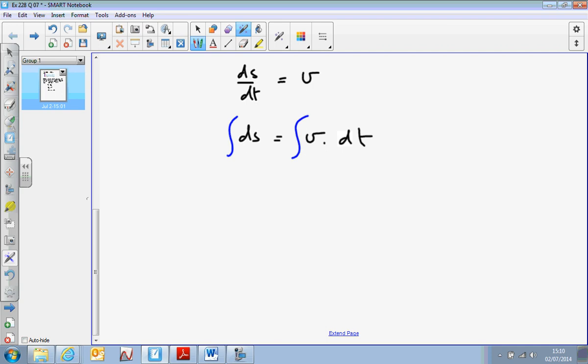Integrating one effectively with respect to s gives us just s. So that gives us our s. And integrating v with respect to t gives us vt because v can be treated as a constant.